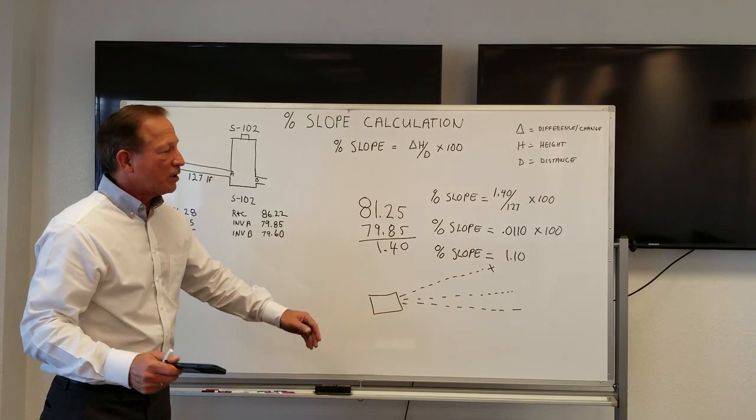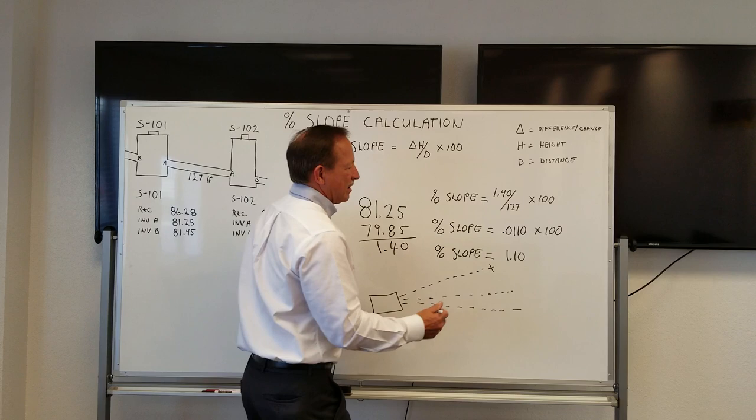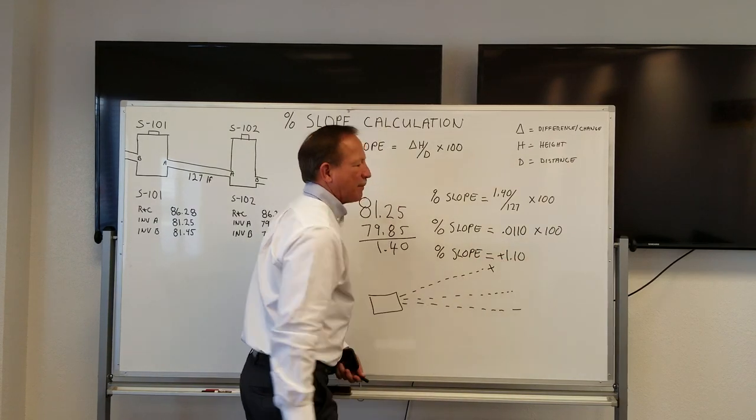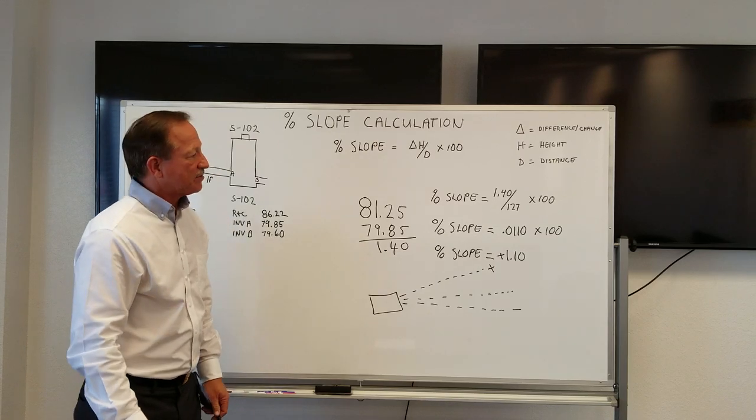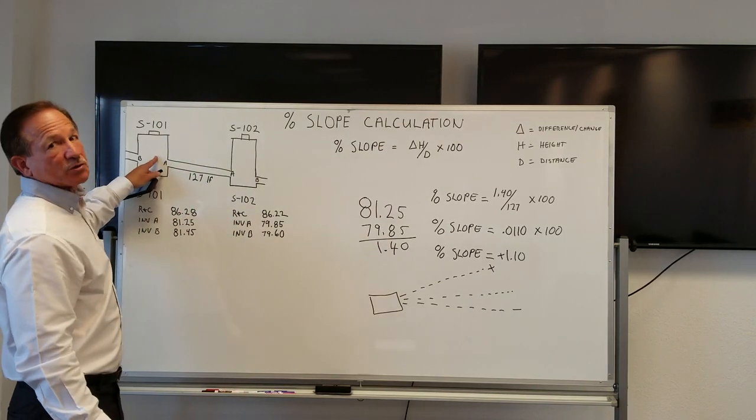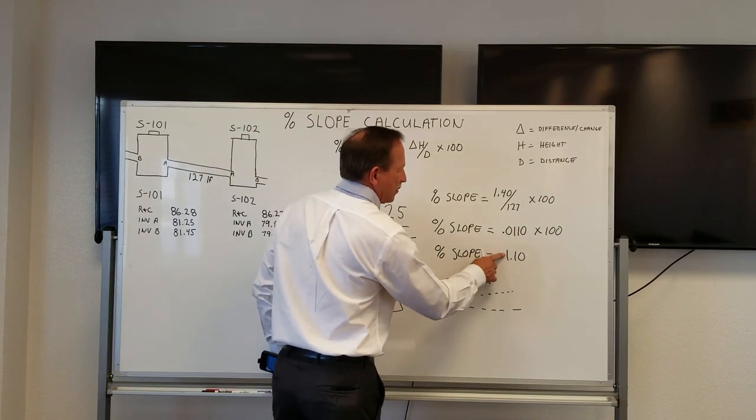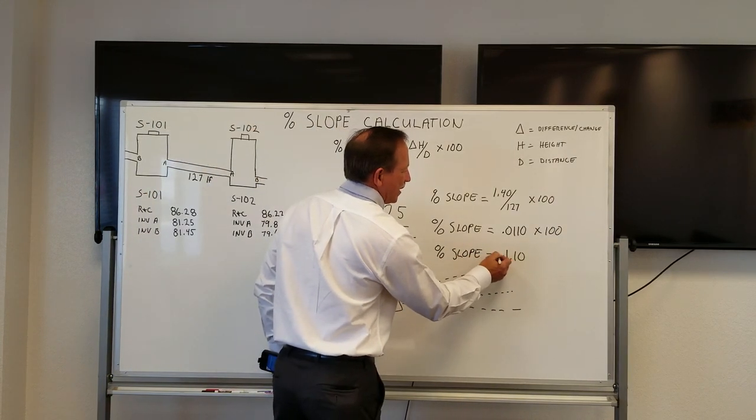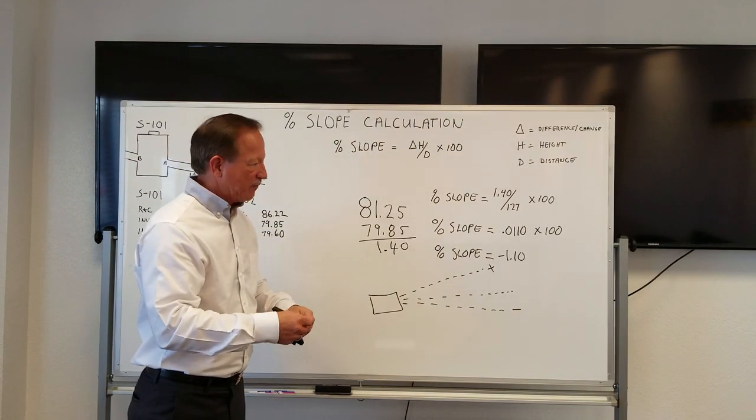So you're laying your pipe, you're going to lay uphill, that's positive direction. So you're actually going to enter a positive, a plus 1.10 in that pipe laser. If you're going to lay from structure 101 to 102, you're going to make the reading a negative. Positive you're laying uphill, negative you're downhill. Makes a big difference.